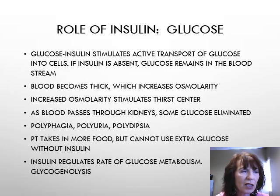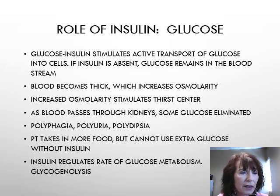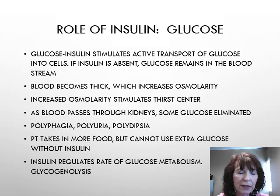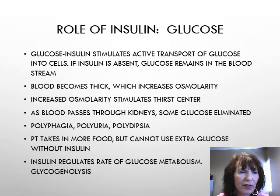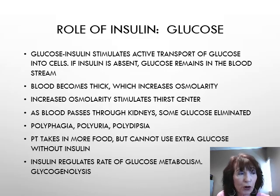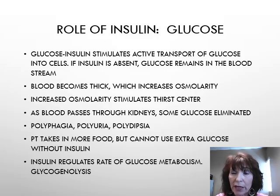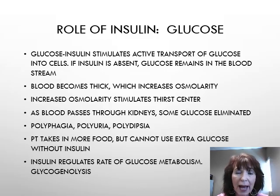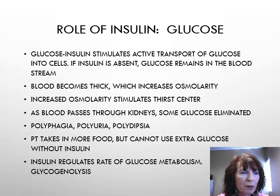The three P's are polyphagia — eating a lot, polyuria — urinating a lot, and polydipsia — drinking a lot. The patient takes in more food but cannot use the extra glucose without insulin, so weight loss occurs despite increased appetite and food intake. Insulin also regulates the rate of glucose metabolism — you need to understand glycogenolysis, the process of glycogen being converted to glucose.